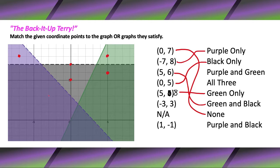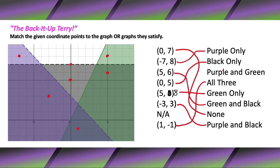Negative three and three is right there — that's in the purple and black region. Now, before you do 'not available,' I would do all the actual corner points first. Let's graph one and negative one — so one and negative one is green, purple, and black, so it's all three. The only one that's not available is purple and green only. There is a purple and green area, but it's purple, green, AND black, so there's no section where it's just purple and green. So 'purple and green only' is not available.